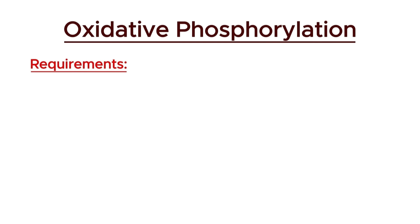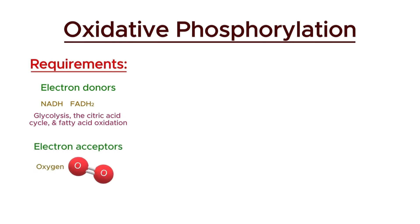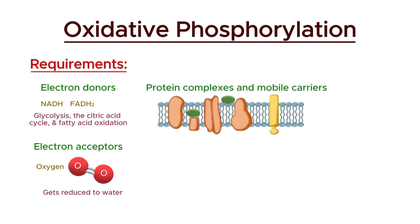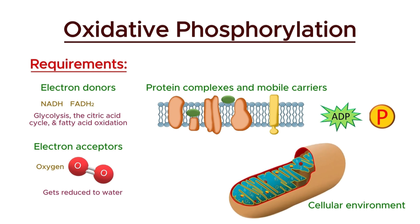For the process, we need electron donors — NADH and FADH2 — produced during glycolysis, the citric acid cycle, and fatty acid oxidation. We also need electron acceptors: oxygen, which is the final electron acceptor and gets reduced to water. Additionally, we need protein complexes and mobile carriers, ADP and inorganic phosphate for ATP synthesis, and a cellular environment — the mitochondria — incorporating the mitochondrial matrix, inner membrane, and intermembrane space.